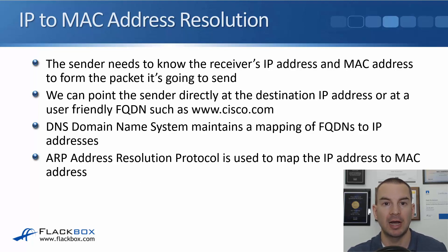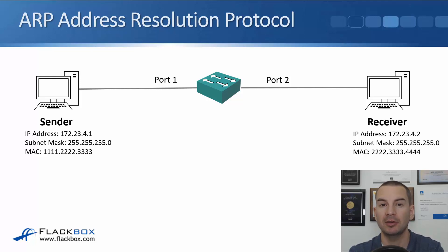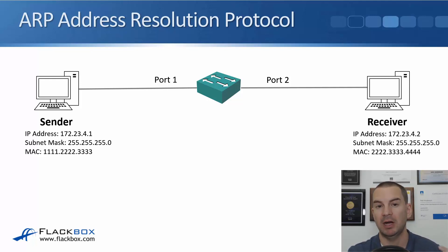ARP maps the destination IP address to the destination MAC address. In the example here, we've got a sender on the left at 172.23.4.1 and its MAC address is 1.2.3. It's going to send some traffic to the receiver on the right with IP address 172.23.4.2 and MAC address 2.3.4. The sender already knows the destination IP address 172.23.4.2, so it can compose the packet as far as the layer 3 IP header, but it doesn't know the receiver's MAC address yet. So it's going to use ARP to find that out.